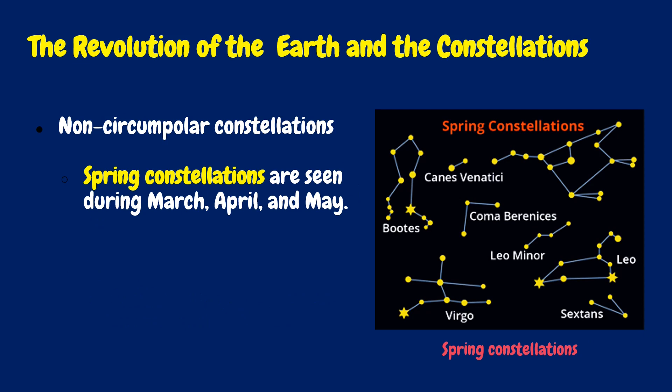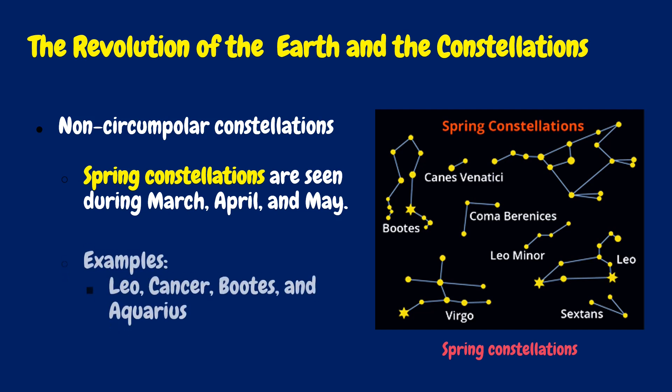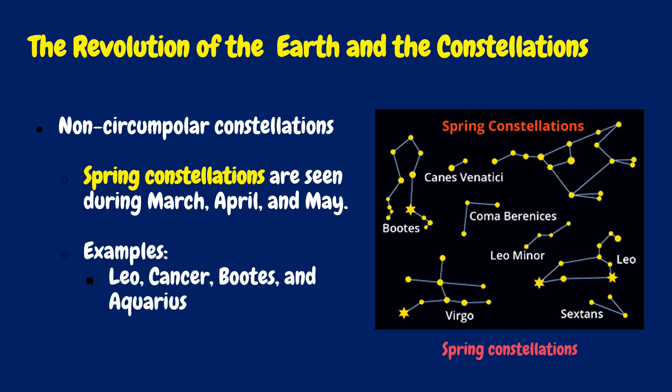Spring constellations are seen during March, April, and May. Examples are Leo, Cancer, Boötes, and Aquarius.